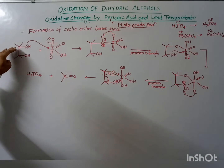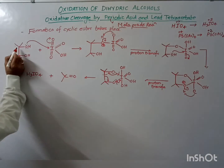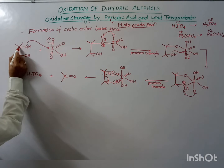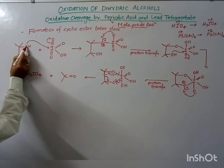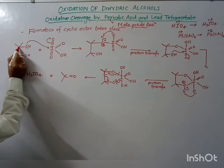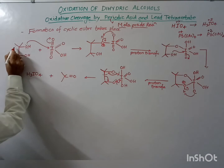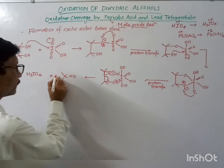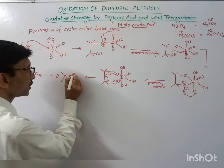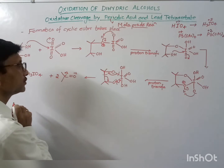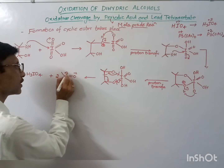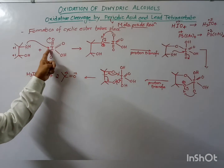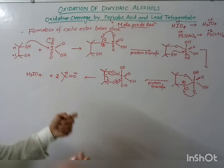Looking at the oxidation states on the carbon atoms: where only one carbon-oxygen bond is present, the carbon has a +1 oxidation state. In the carbonyl product, where oxygen has a −2 charge, the carbon has a +2 oxidation state. So +1 is converted to +2 on carbon, and +7 is converted to +5 on iodine — confirming this is an oxidation-reduction reaction.